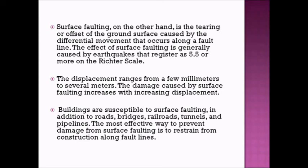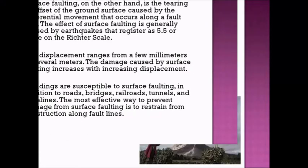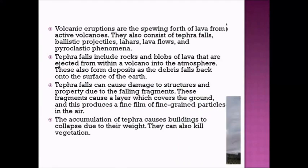The most effective way to prevent damage from surface faulting is to refrain from construction along the fault line. Sadly, some buildings are built on fault lines without checking first, which causes major disasters. Sometimes engineers discover too late that a fault line exists beneath an already-constructed building, resulting in many casualties and damages.